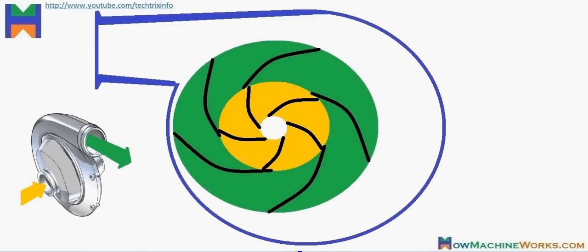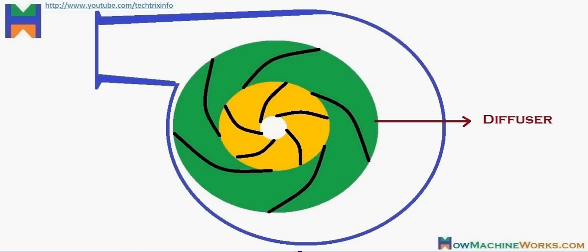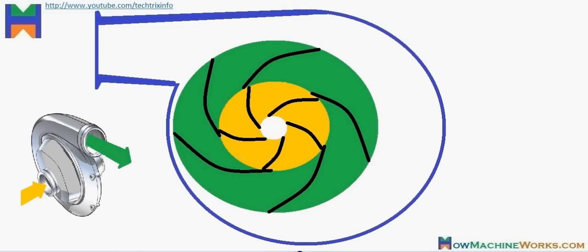As you all know, a centrifugal supercharger is used in an engine to increase the volumetric efficiency of the engine. It gets its drive directly from the crankshaft through a belt drive or a gear drive.